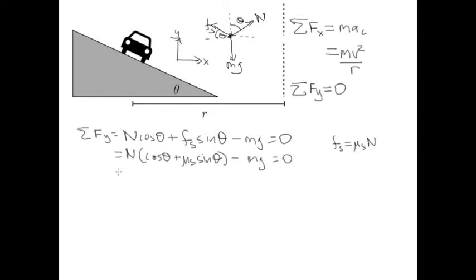And I'm going to solve for the normal force here. The reason I'm going to do that is I know I'm going to get an expression over here. So n cos theta plus mu s sine theta. I'm going to push the mg to the other side. So that's just equal to mg. And then I'm going to divide both sides by this term in brackets here. So I'm going to get that the normal force is mg over cos theta plus mu s sine theta.